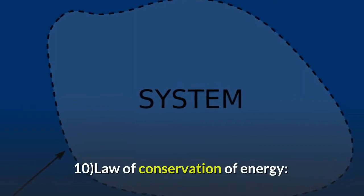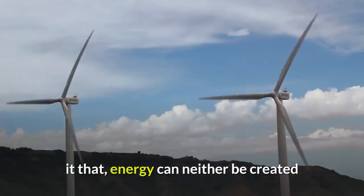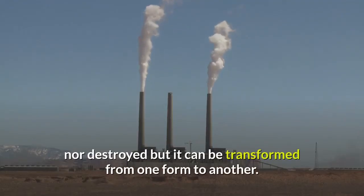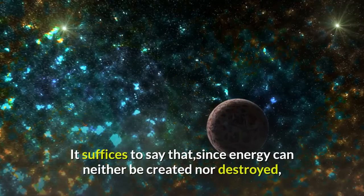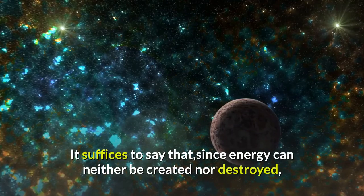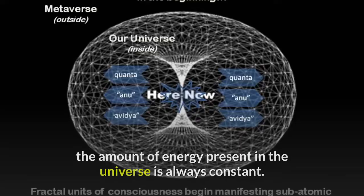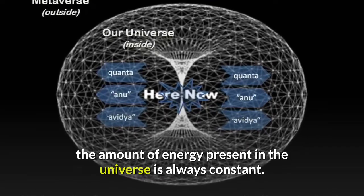Number 10: Law of Conservation of Energy. It states that energy can neither be created nor destroyed, but it can be transformed from one form to another. Since energy can neither be created nor destroyed, the amount of energy present in the universe is always constant.